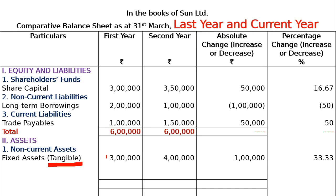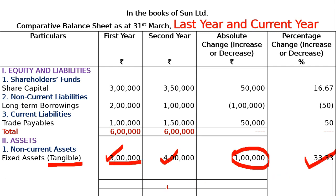For Tangible Assets: first year value is Rs. 3 lakhs, second year value is Rs. 4 lakhs. So 4 lakh minus 3 lakh = Rs. 1 lakh (increase). Percentage change = 1 lakh divided by 3 lakh into 100 = 33.33%.